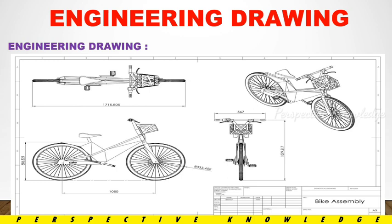In an engineering drawing, you can identify all dimensions and properties. On the title block of the drawing, you can see all the details of the product — material details, product details, customer or supplier information, material type, and description. All product details can be captured. This is called an Engineering Drawing.